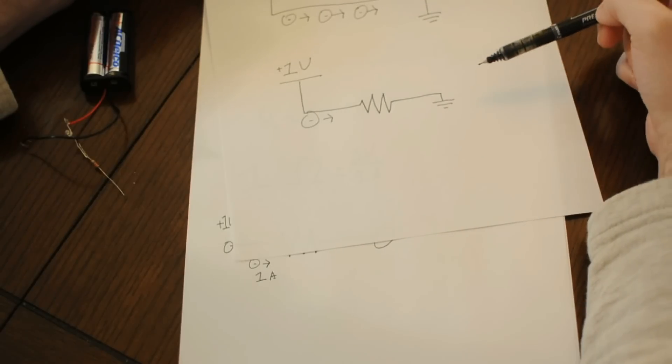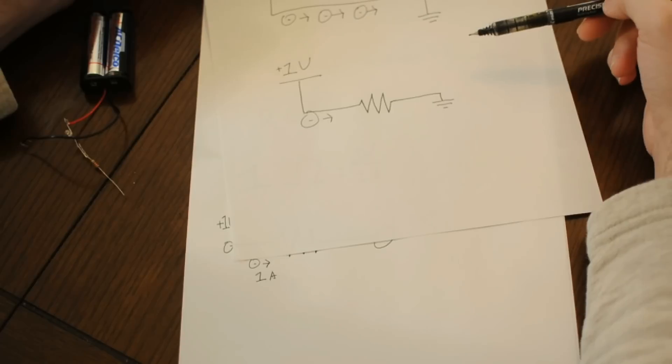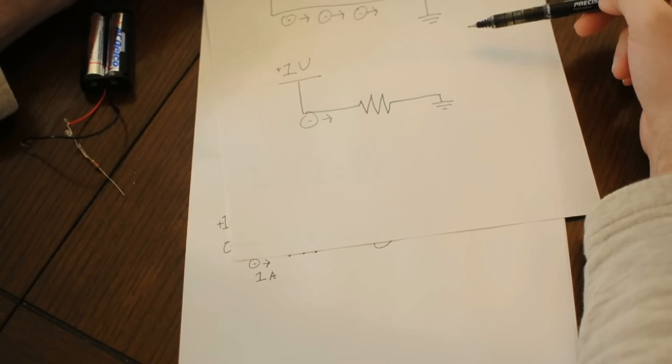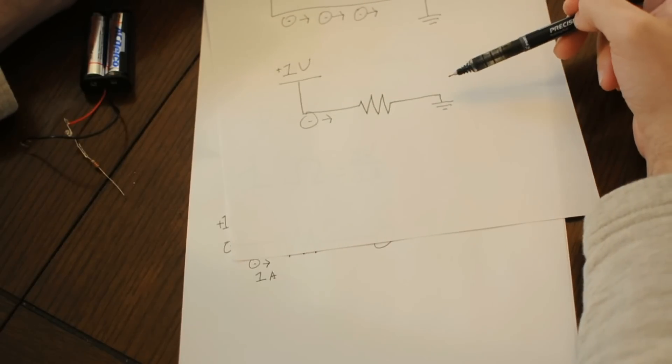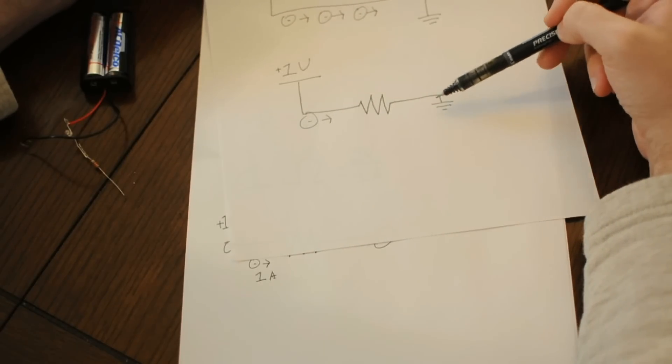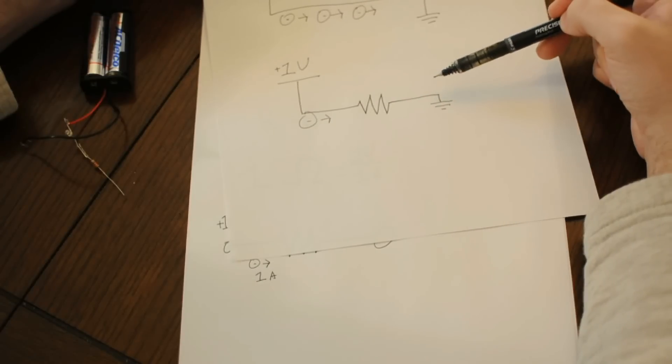So one ohm is very little resistance. Everything has a little bit of resistance, even wires and conductors. 10,000 ohms is a lot of resistance, and would only allow a very small amount of current to flow.